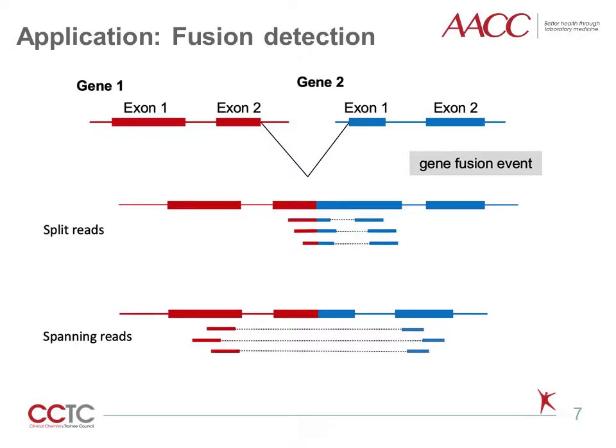RNA-Seq can be used for fusion detection. Most RNA-Seq in the clinic is paired-end sequencing, meaning that reads are sequenced from both ends of each RNA fragment, but the middle of the RNA fragment is not sequenced. There are two types of evidence to support an RNA fusion event from paired-end RNA sequencing: split reads and spanning reads. A split read maps to exons from different genes and contains the fusion site in one of the paired-end read sequences. In a spanning read, the paired-end reads map to exons from different genes, but the fusion site is not in one of the read sequences, implying that it is within the fragment.